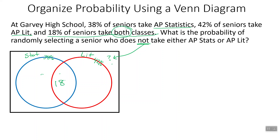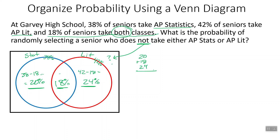18 take both, so 18% goes in the middle. If 18 is in the middle and we have 38 total in the stat circle, subtracting 18 leaves 20 in the rest of that circle. For AP Lit, 42 minus 18 leaves 24. Adding up: 20 plus 18 plus 24 equals 62, so we've used 62% in the circles. Then 100 minus 62 gives us 38%, which is outside — that's the answer.